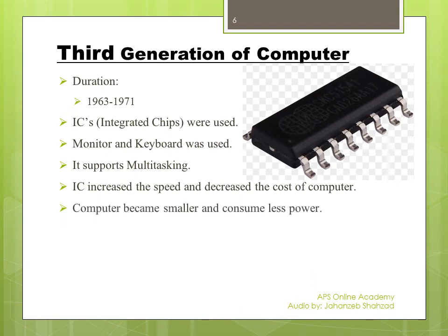Computers became much smaller and consumed less power compared to the first and second generations. As you can see, in every new generation the speed of the computer becomes faster, the size smaller, and they consume less power.